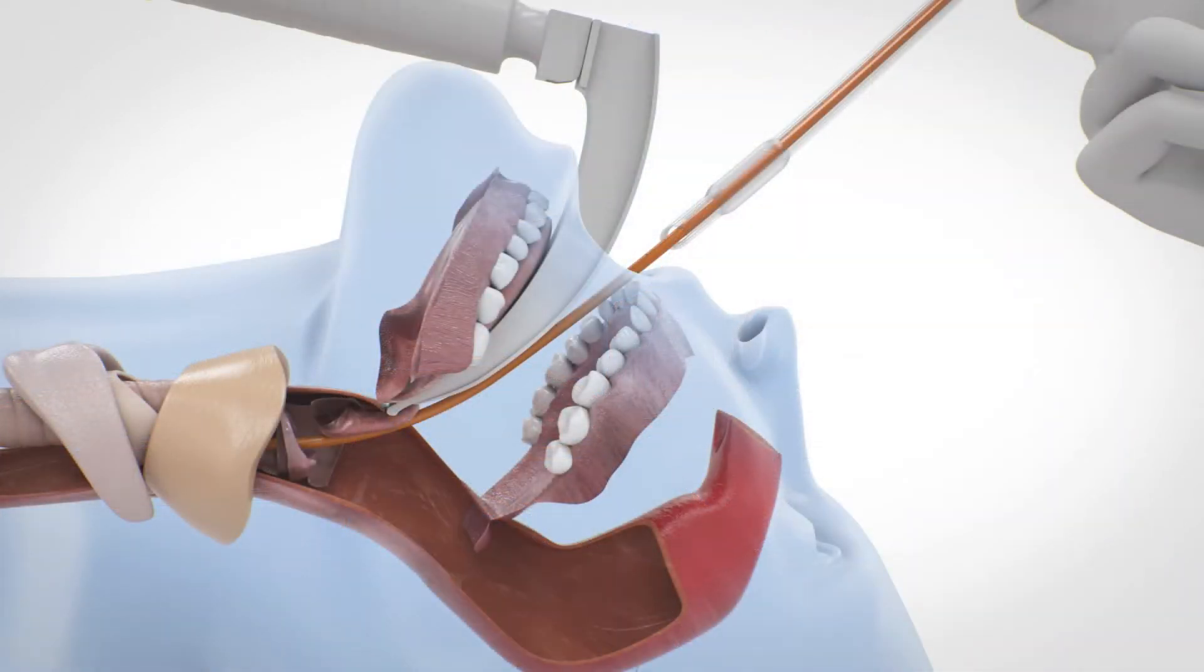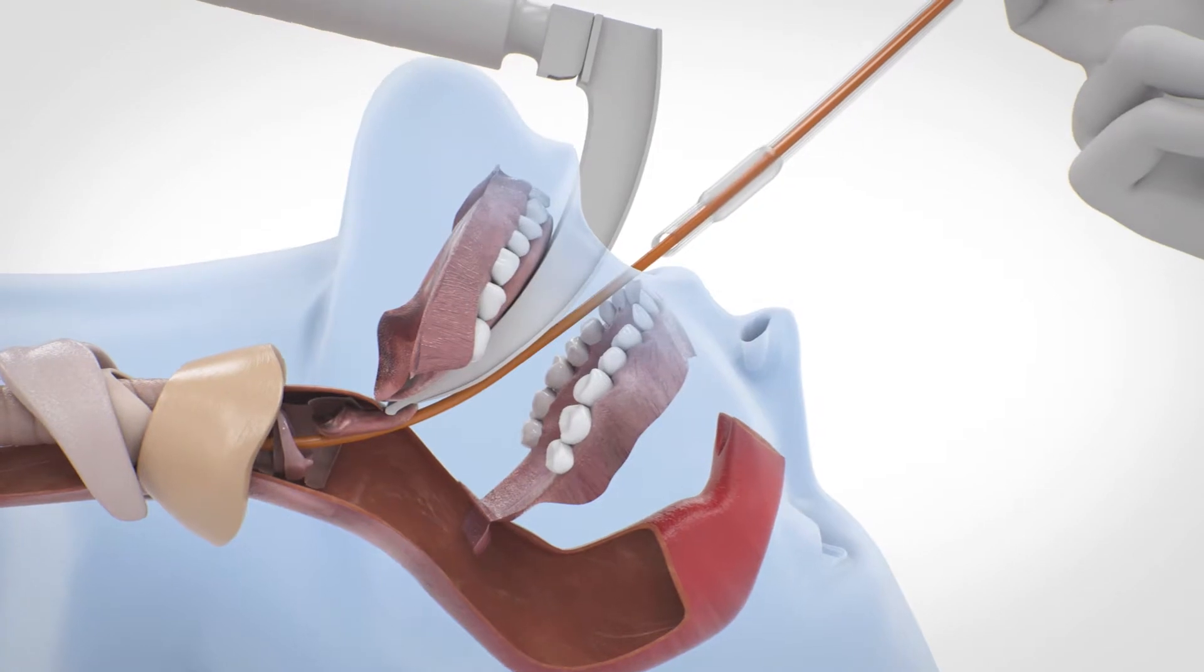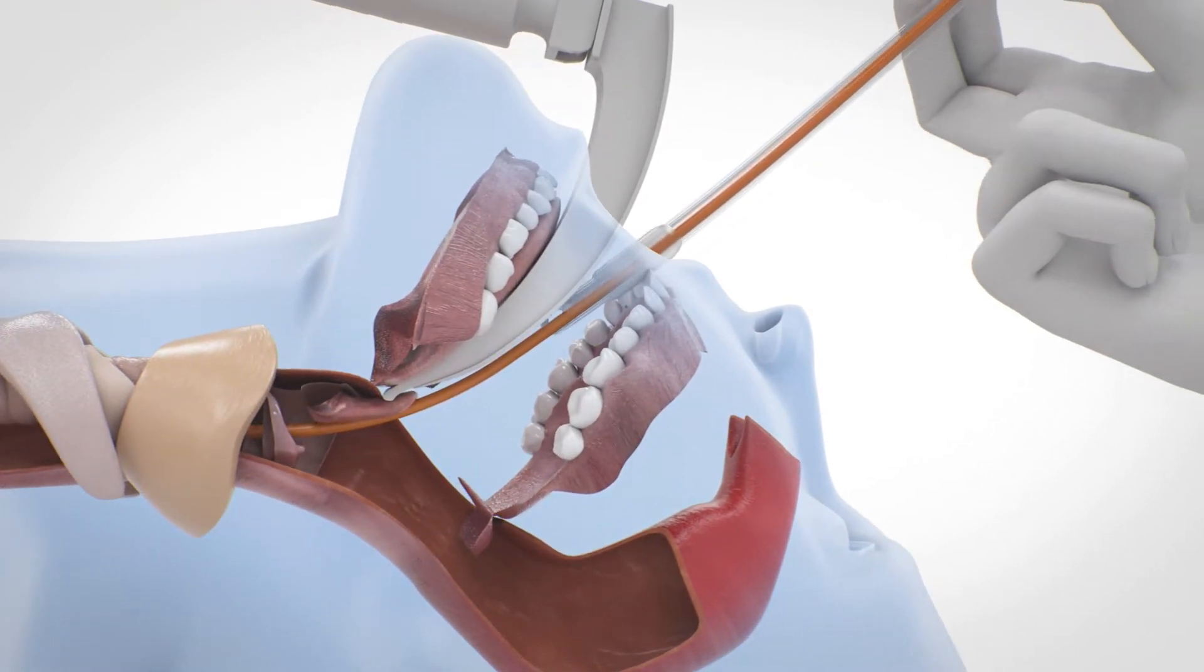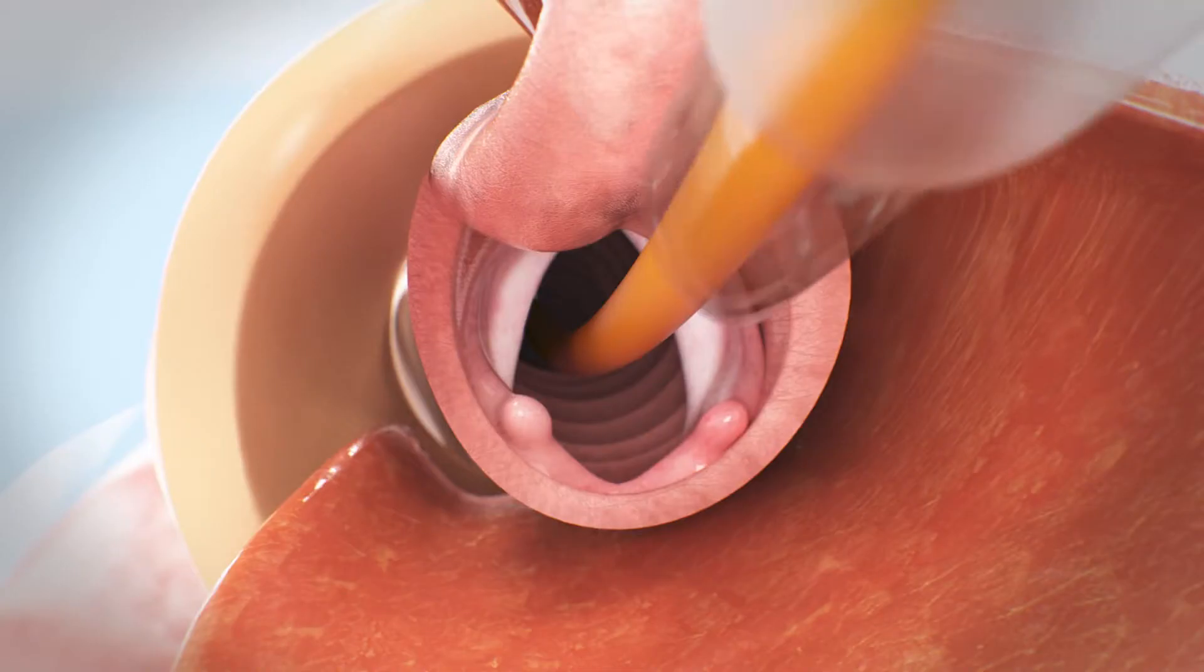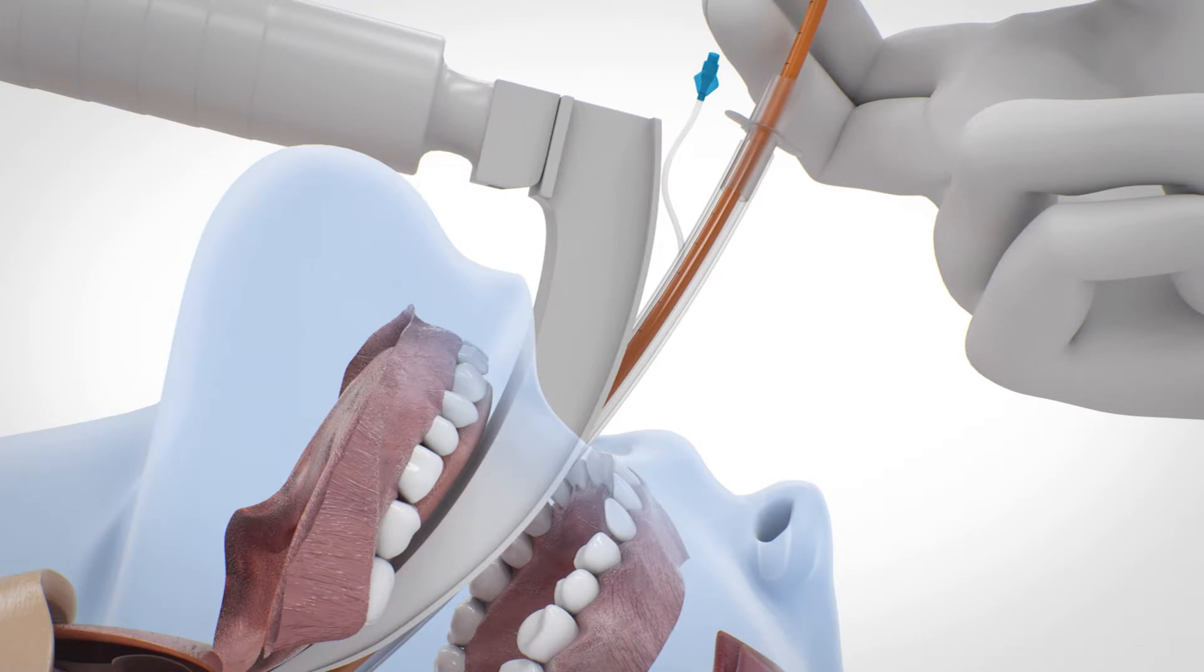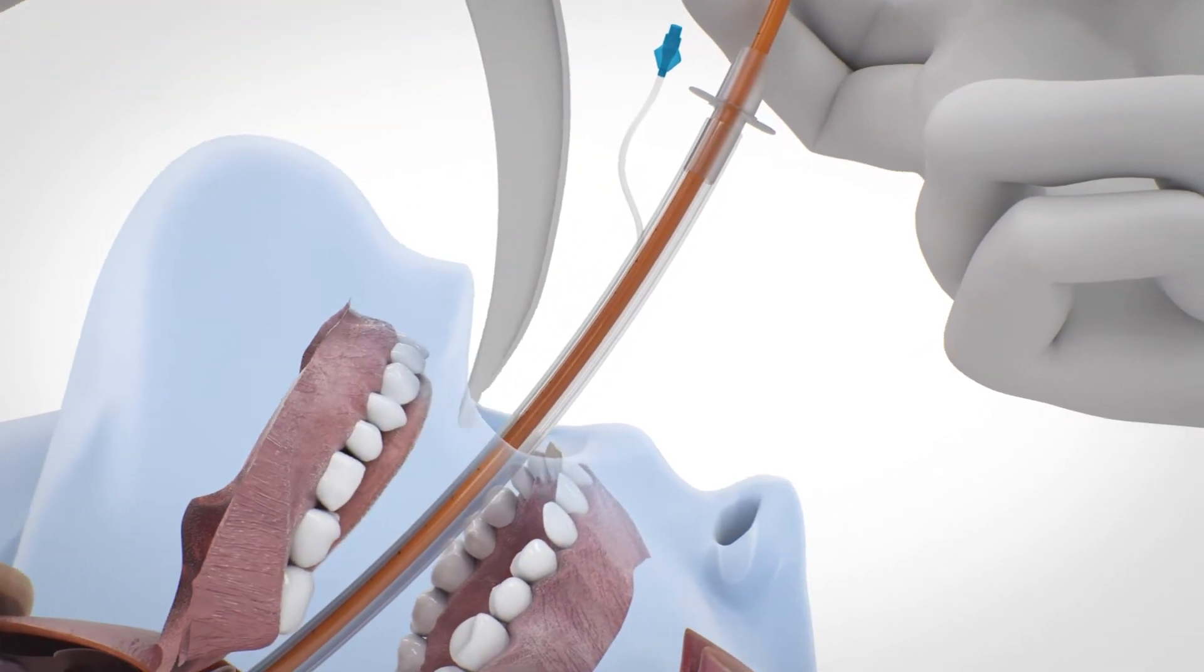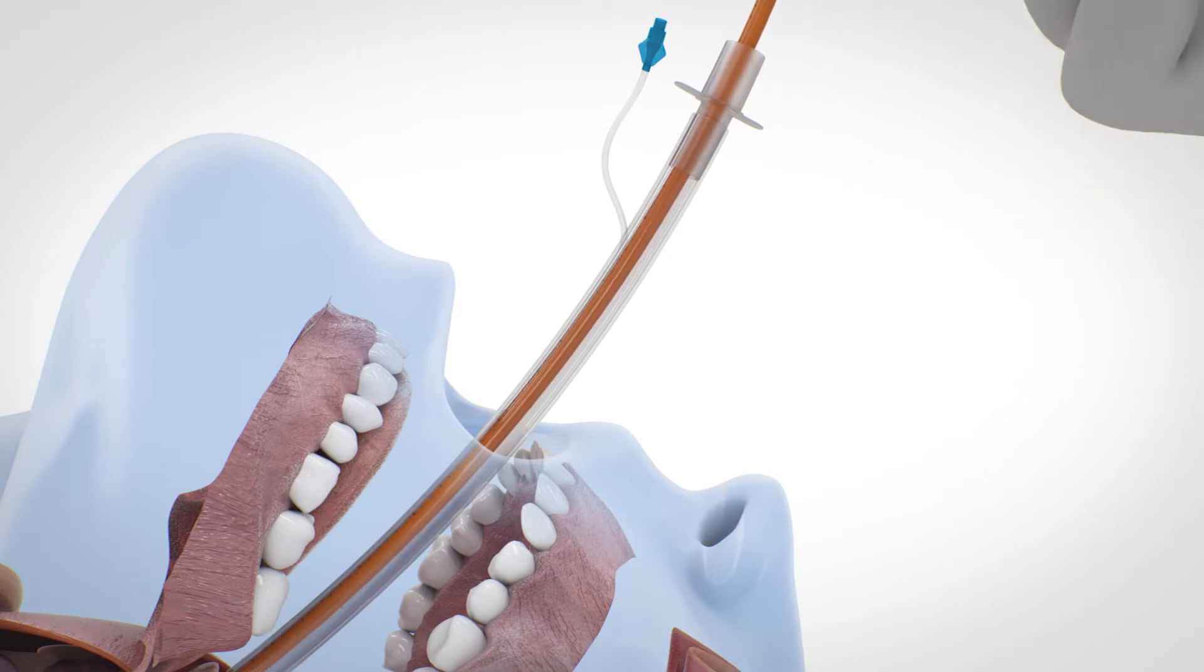After successful tracheal placement, maintain position of the EyeBougie and railroad the tube into the trachea. Maintain visualization of the glottis with a laryngoscope to ensure correct placement of the tube. Hold the tube in position, then remove the laryngoscope before finally removing the EyeBougie. Check for correct positioning of the tube by common procedures.